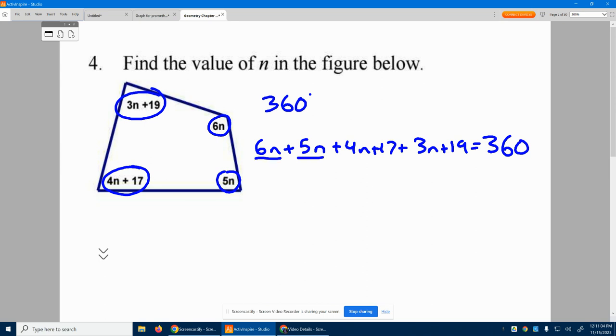Okay, so 6N, 5N, that's 11N, 15N, 18N. I got 18N there for that piece. Let's add up our numbers. 17 and 19 is 36 equals 360.